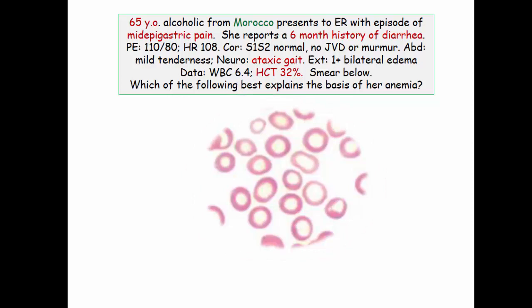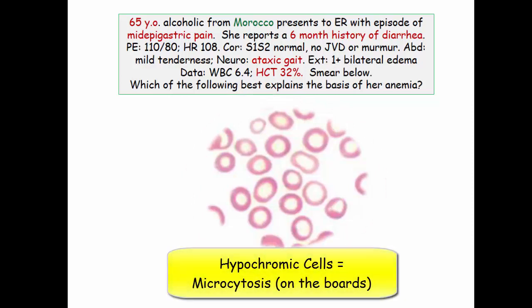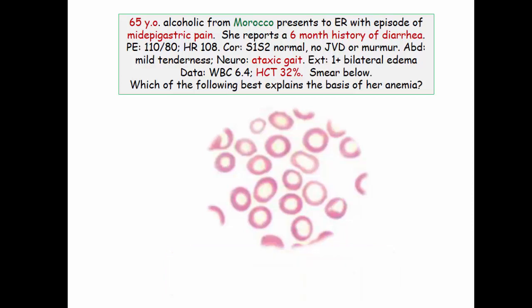What we do see: hypochromic cells. There is no lymphocyte to compare for size, but hypochromic cells on Step 1 equals microcytosis. These are microcytic hypochromic cells — this is a must-know smear.